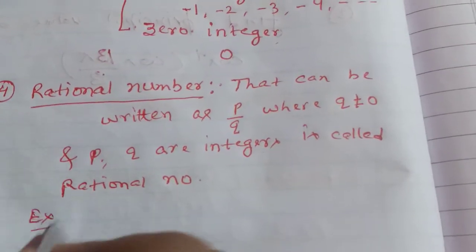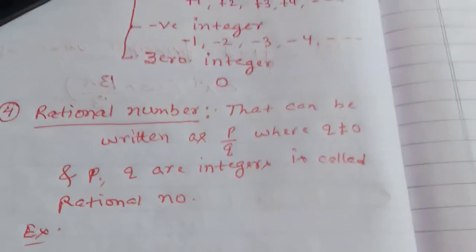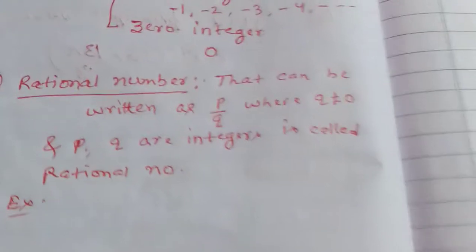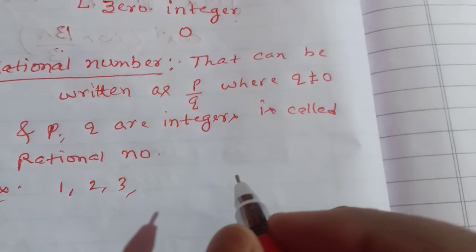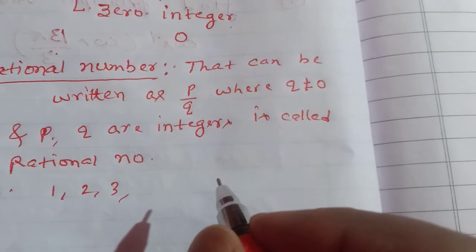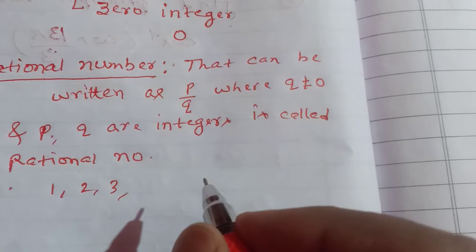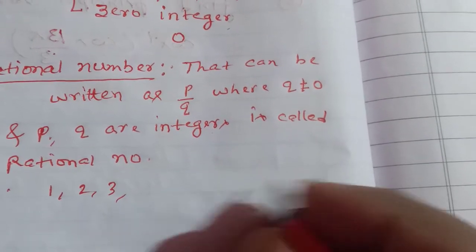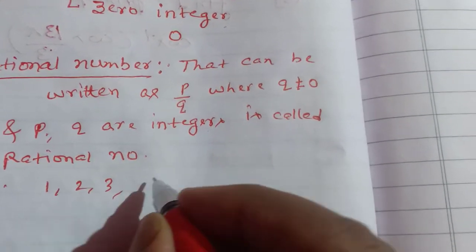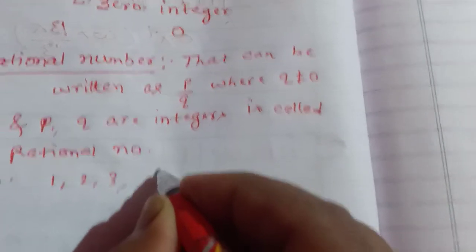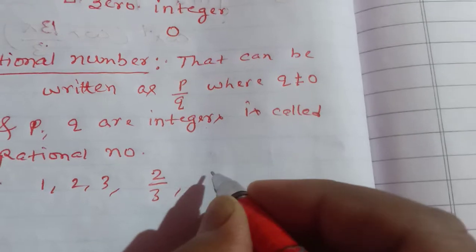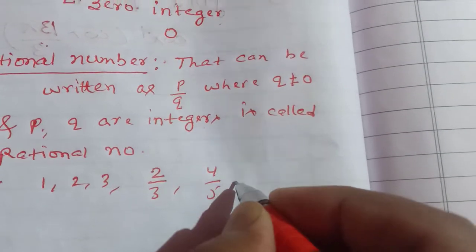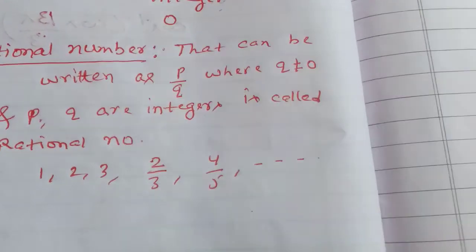Examples of rational numbers: all natural numbers are rational numbers, for example 1, 2, 3. All integers are rational numbers. Also, numbers that can be written as a fraction like 2 by 3, 4 by 5 — those are called rational numbers.